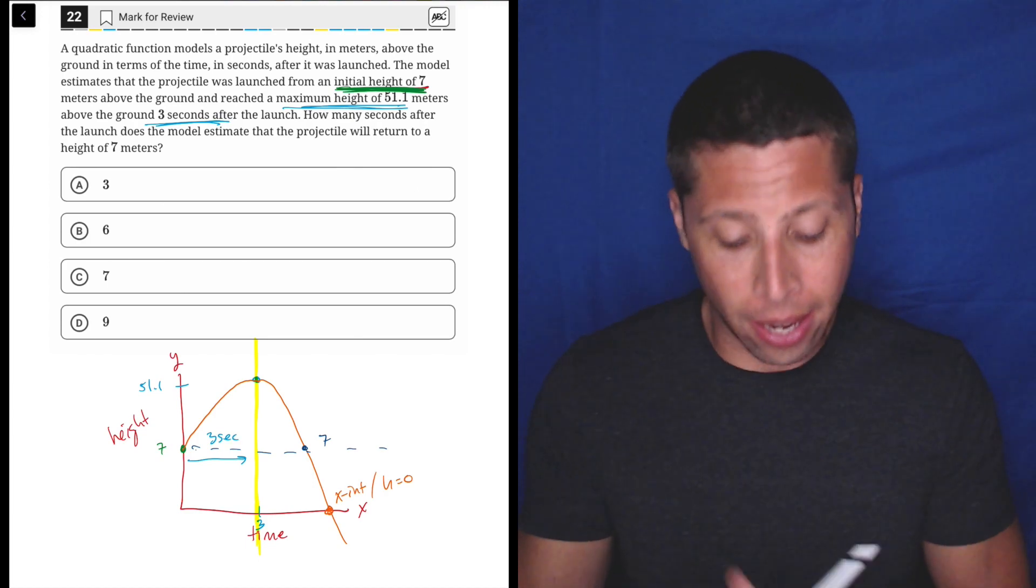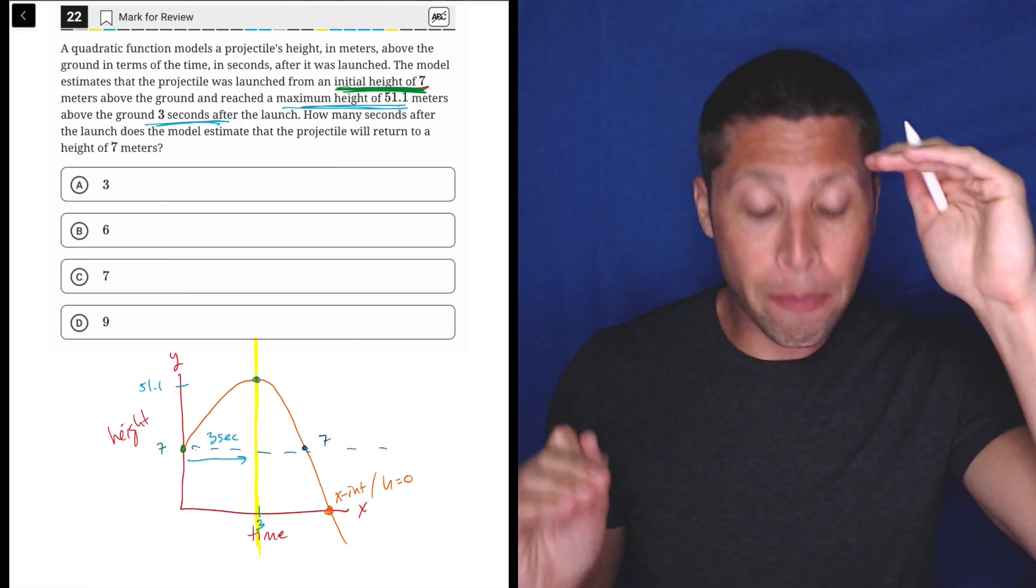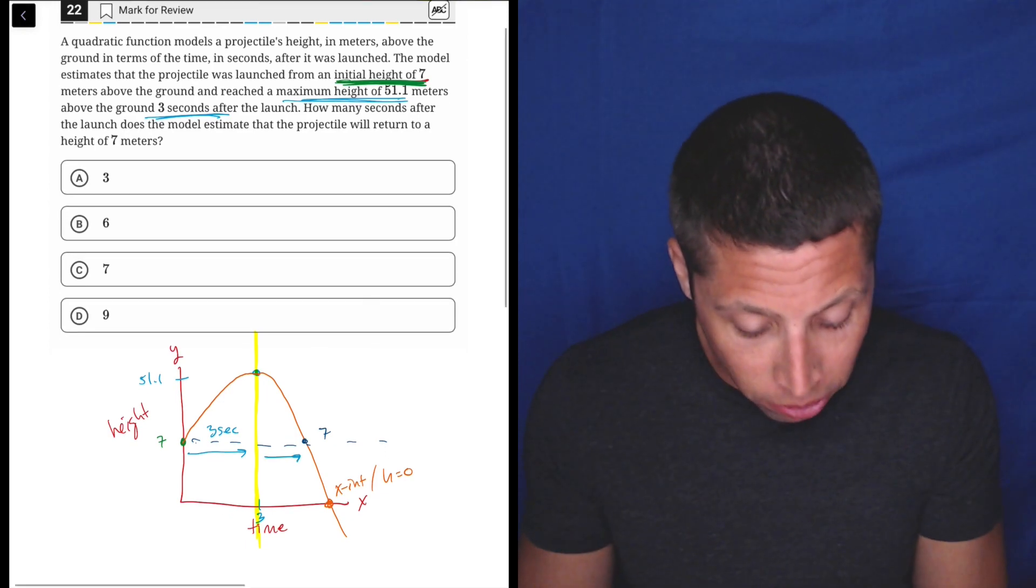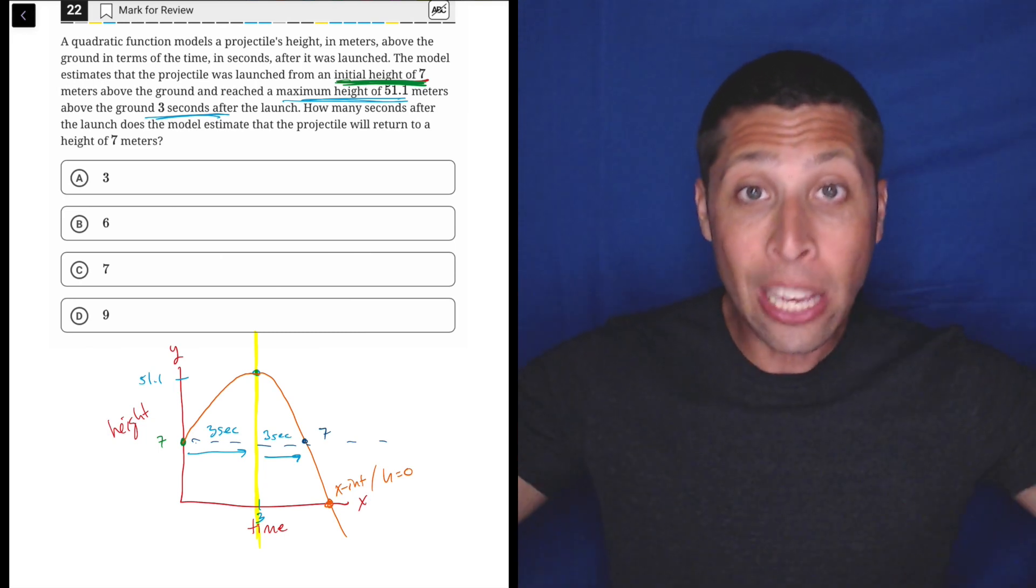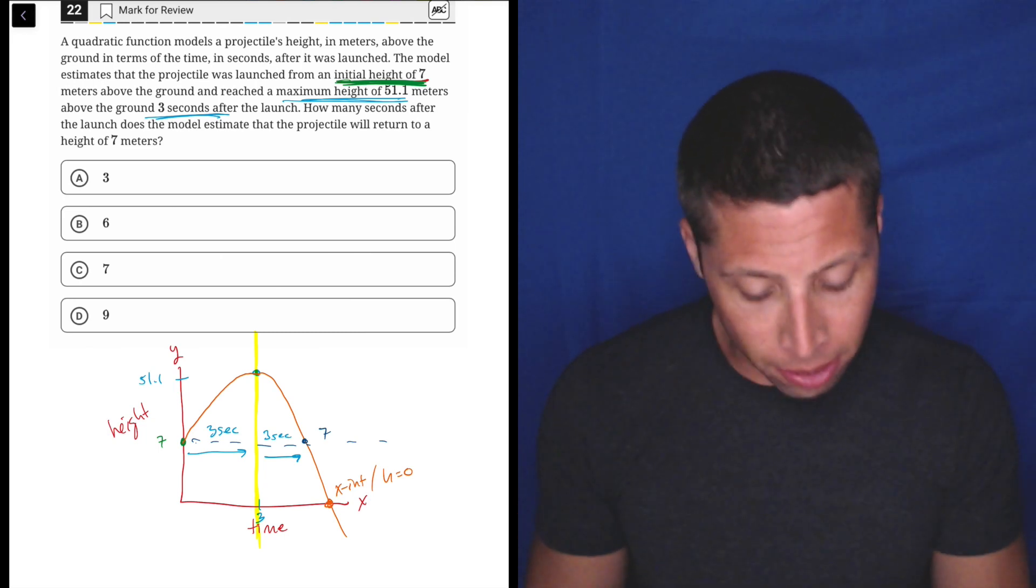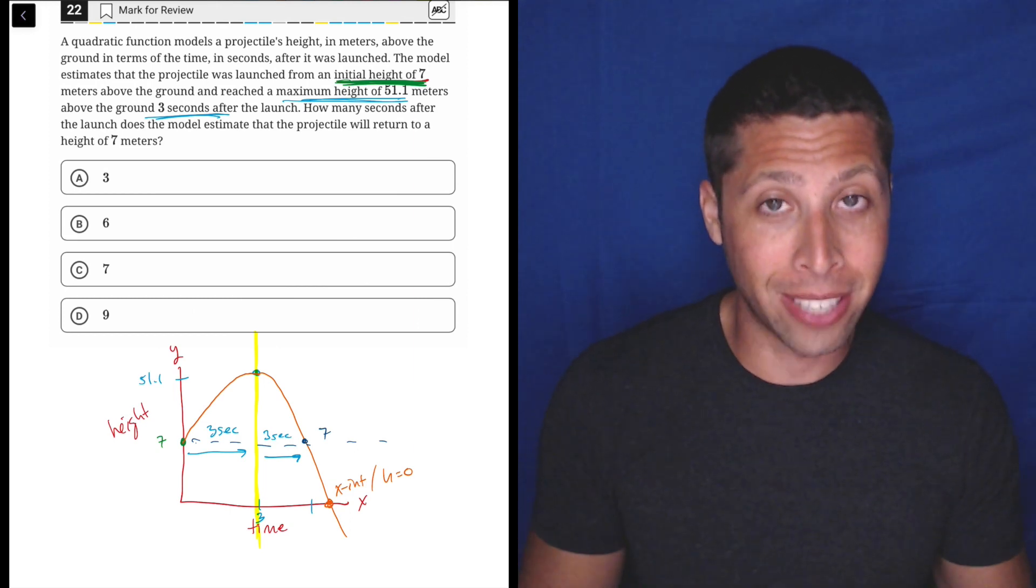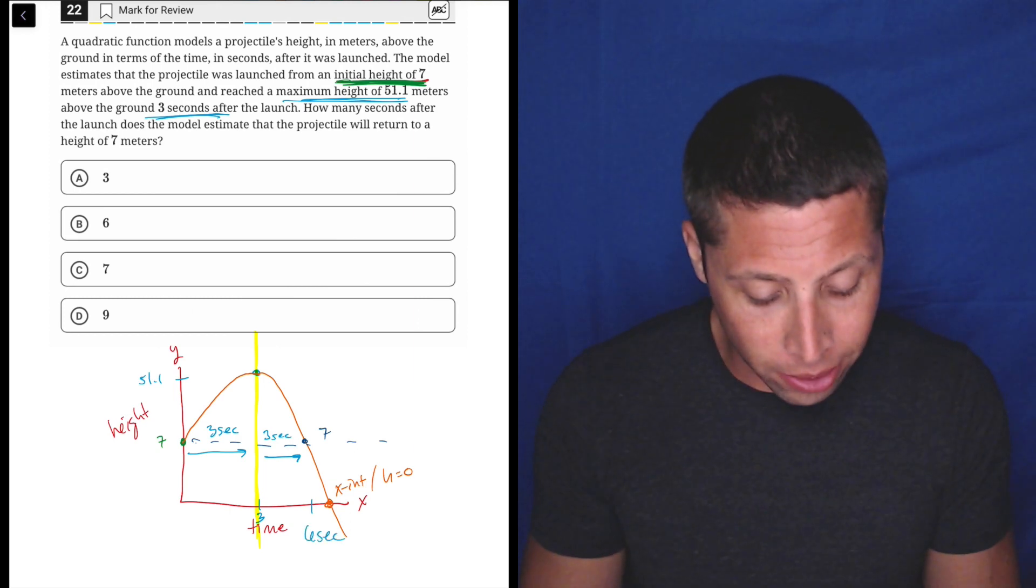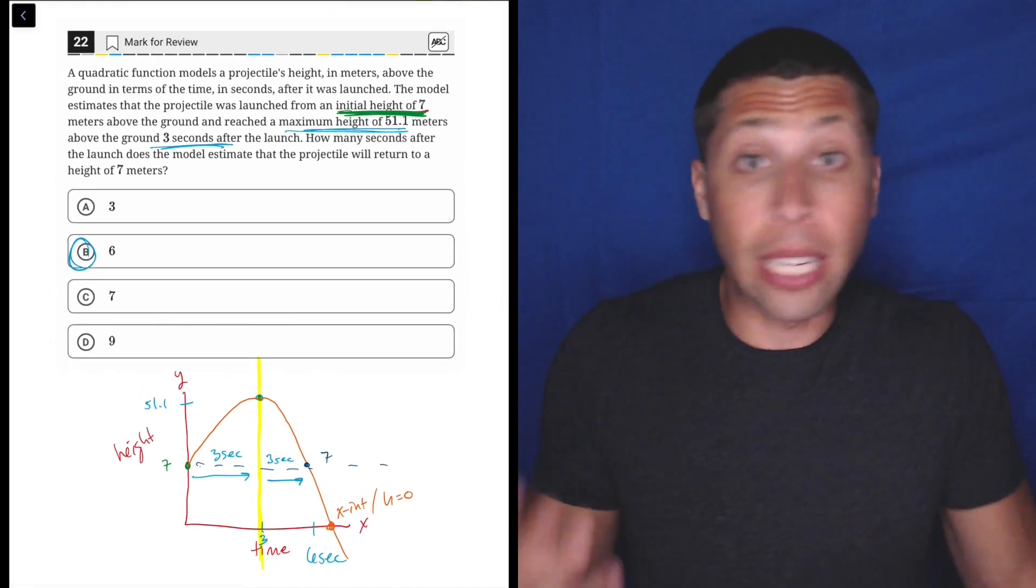So it's symmetrical. So what happened? Three seconds went by to go from the launch to the maximum. So if we want to get back to seven, we need three more seconds to go by because it's symmetrical. Three seconds on the left, three seconds on the right, either way we're at seven. So that means, okay, well if it took us three seconds in the middle, another three seconds back to seven is a total of six seconds. So choice B is the answer.